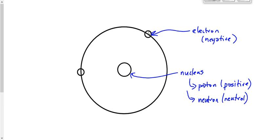We know that electrons are fundamental particles — it doesn't get any smaller than electrons. But we know now that protons and neutrons, although we think of them often as fundamental particles, they're not actually. Protons and neutrons are made up of much smaller particles called quarks, and we'll talk about those in a lot more detail in our final unit. The reason we're not going to talk about those now is because this unit focuses on the electrons.